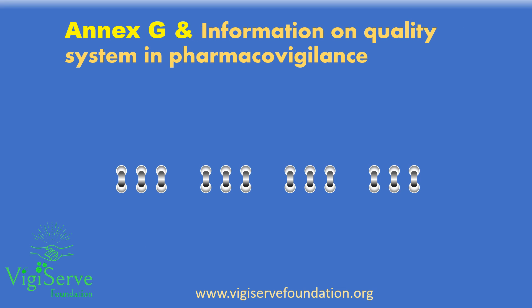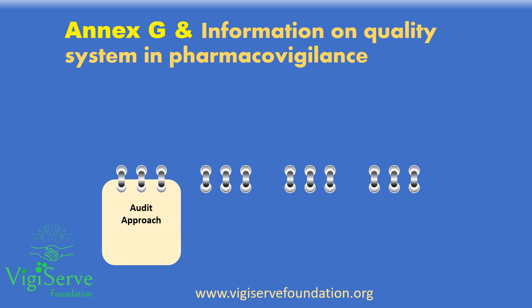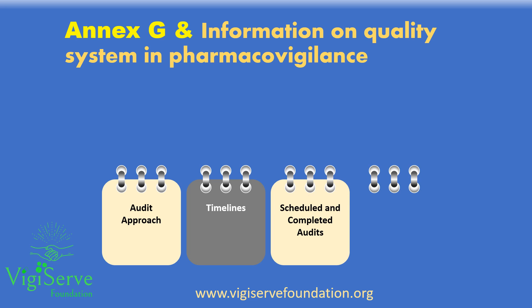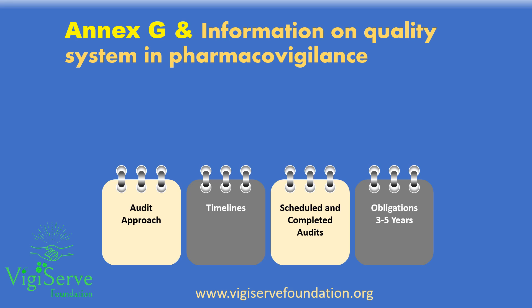Annex G pertains to the information on the quality management system for pharmacovigilance. Information about quality assurance auditing of the pharmacovigilance system should be included in the PSMF. A description of the approach used to plan audits of the pharmacovigilance system and the reporting mechanism and timelines should be provided, with a current list of the scheduled and completed audits maintained. This list should describe the dates of conduct and of report, scope and completion status of audits of service providers, specific pharmacovigilance activities or sites, and cover a rolling three to five year period.